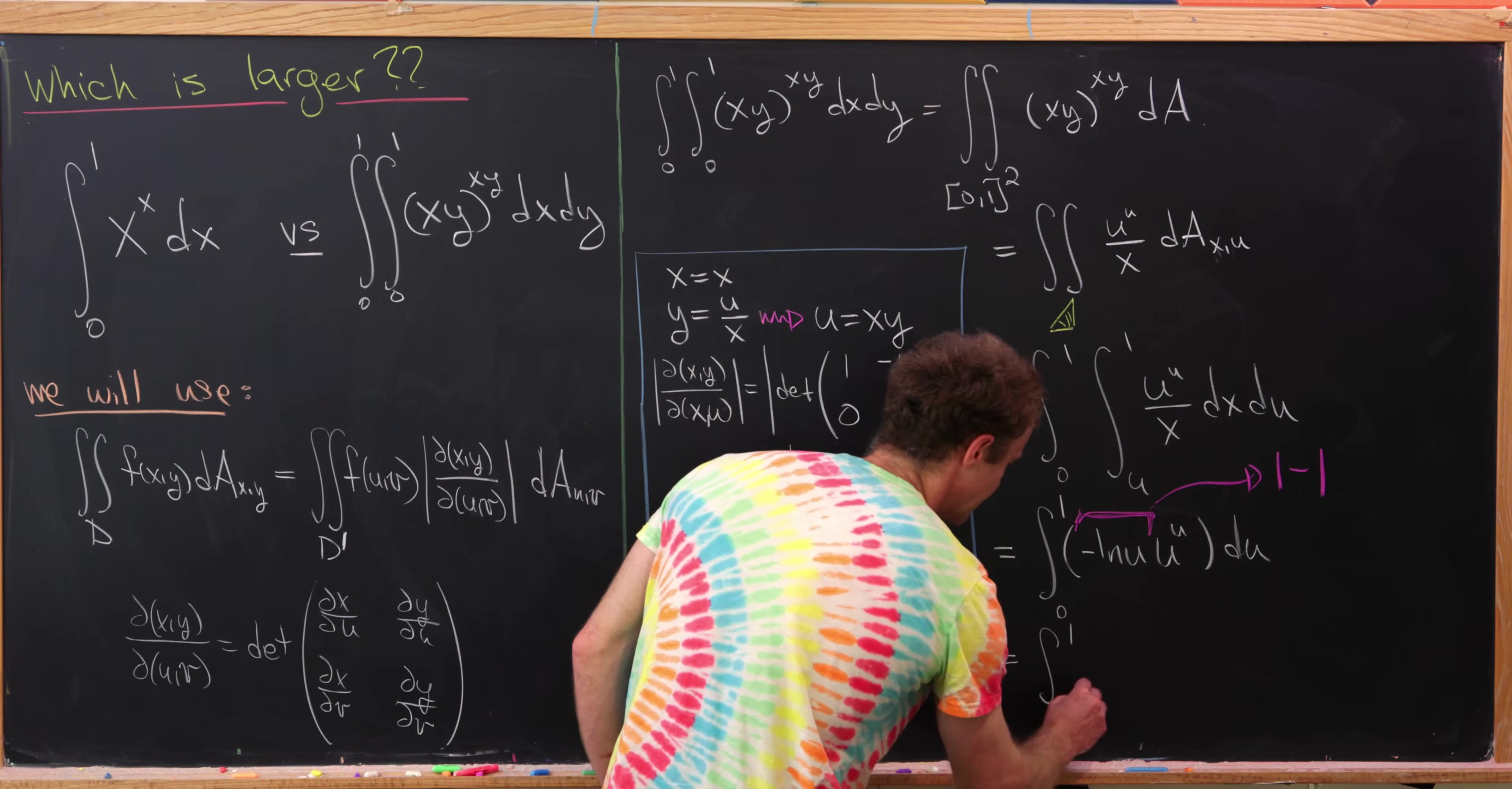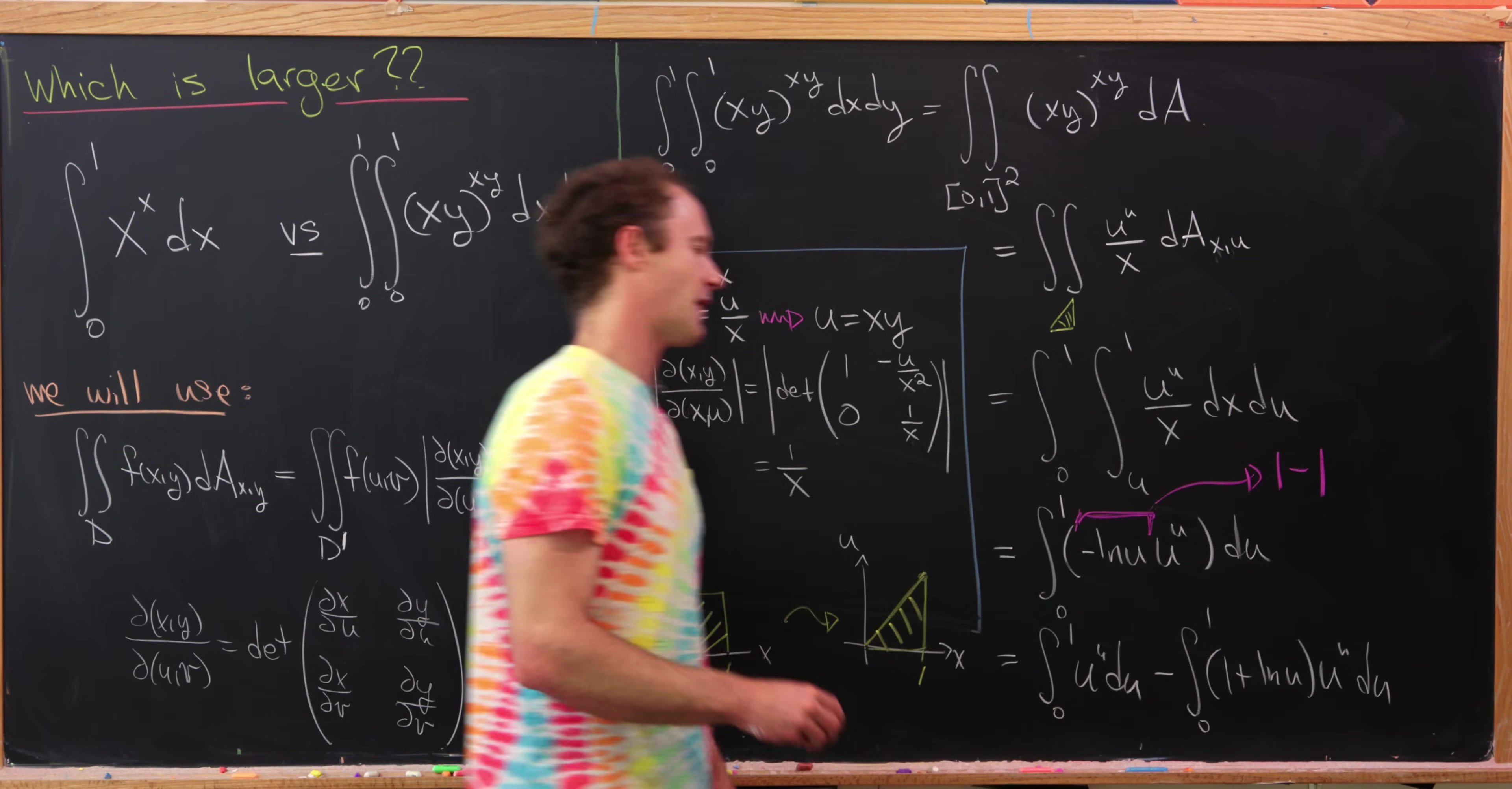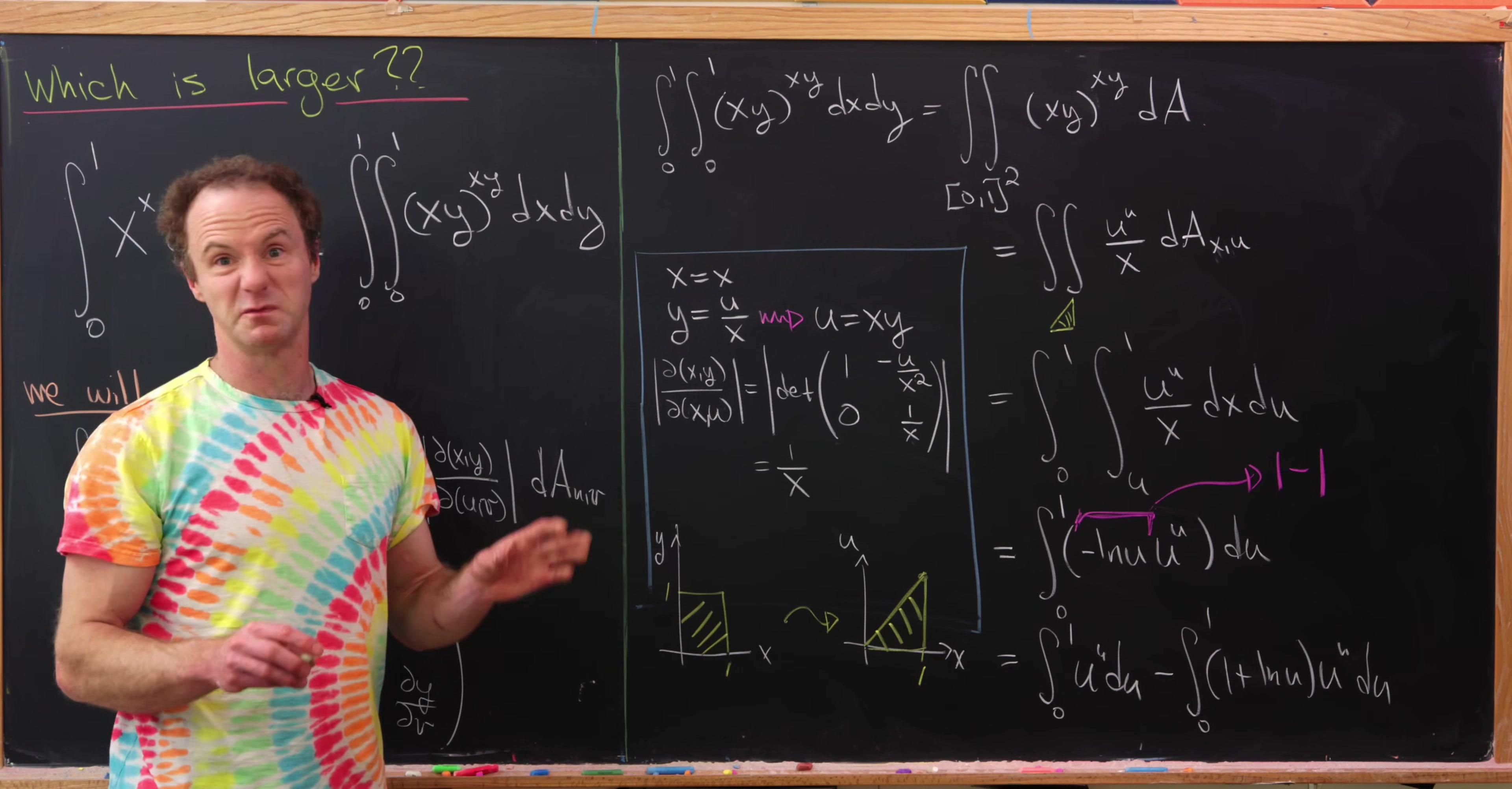We'll have the integral from 0 to 1 of u to the u du, so that'll be from this positive 1, and then minus the integral from 0 to 1 of 1 plus the natural log of u times u to the u. So that'll be from that minus 1. Notice I just pulled the minus sign out. The natural log is also attached to a minus sign. Good.